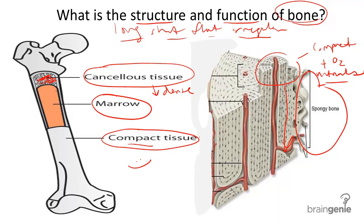In the center of this bone is a cavity containing different types of bone marrow. One is called red and one is called yellow. Marrow is basically the site for the production of blood cells.